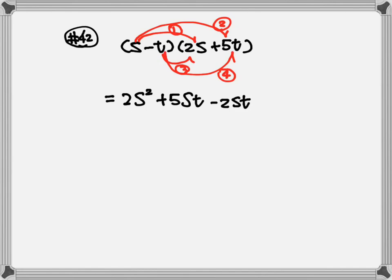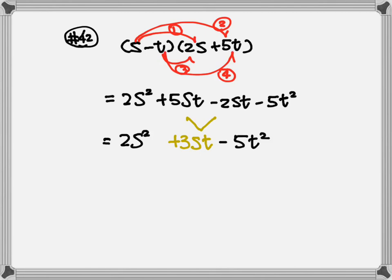Step 4: negative T times 5T becomes negative 5T squared. Then combine like terms — keep the 2S squared. We have plus 5 minus 2, which becomes plus 3ST, then bring down the minus 5T squared.